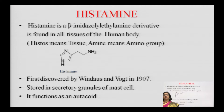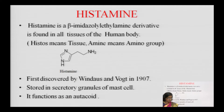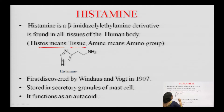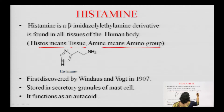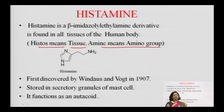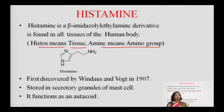First I will start with histamine — you should know what histamine is. If you break the word histamine, it is 'histos' meaning tissue and 'amine' meaning amino group. So histamine is basically a tissue amine. Chemically, it is known as a beta-imidazoline ethylamine derivative, which is found in all tissues of the human body.